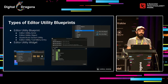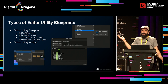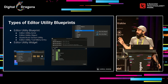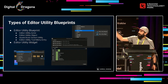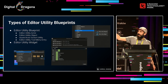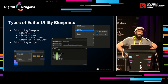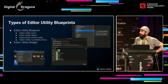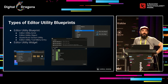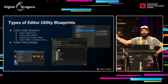Editor Utility Blueprints — in the past there were a few of them. You had an option to create the Editor Utility Actor object, maybe the Asset Action and Actor Action Utility. But now you have way more options than just those, and also way more options within them.